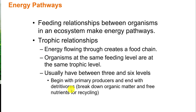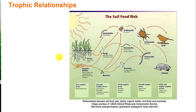It ends with detritivores — organisms responsible for breaking down organic matter and freeing the nutrients. Earthworms are a large example, and fungi and bacteria within an ecosystem are very important in breaking down organic matter in the soil. Some larger detritivores include vultures, and some carnivores are considered to have a detritivore function as well, breaking down animals. The true detritivores then break material down into smaller nutrient parts. Here is a graphic depiction showing five trophic levels.